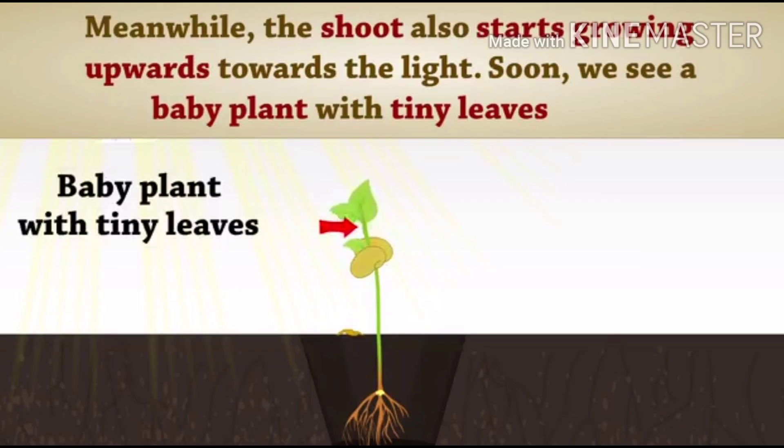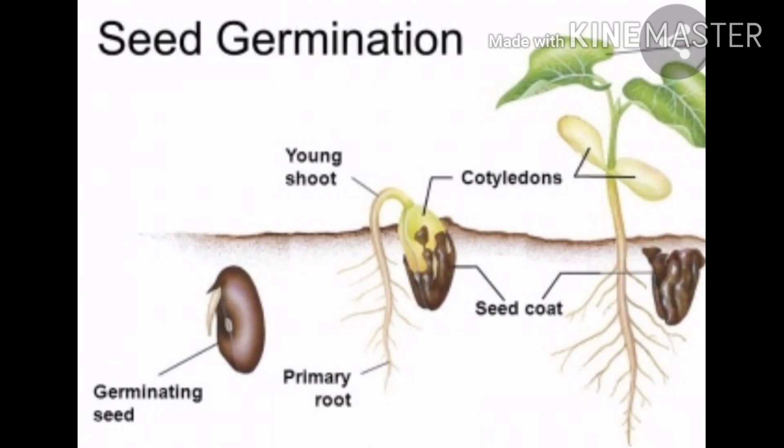Fourth, the plant grows in size and new leaves start developing. Once the food stored in the seed leaves finishes, the leaves start making food through the process of photosynthesis.